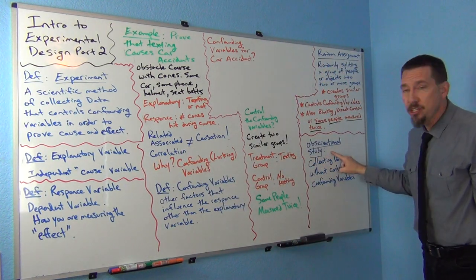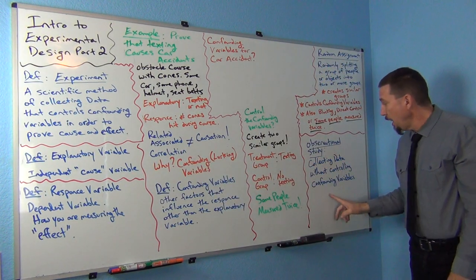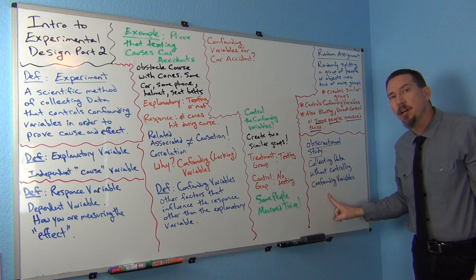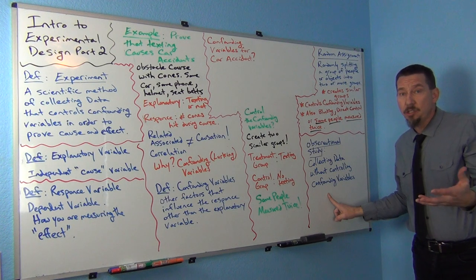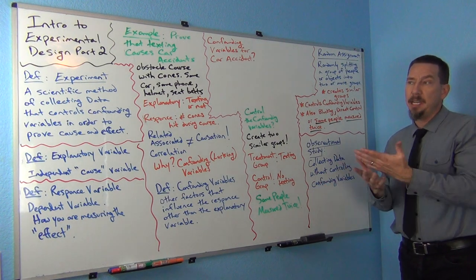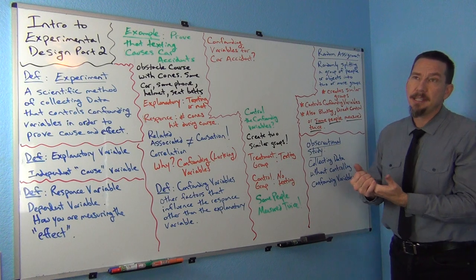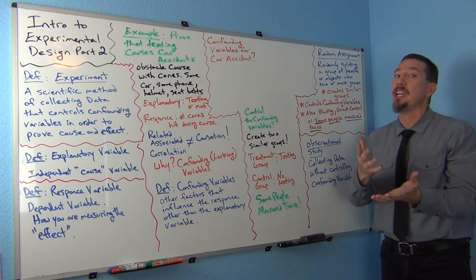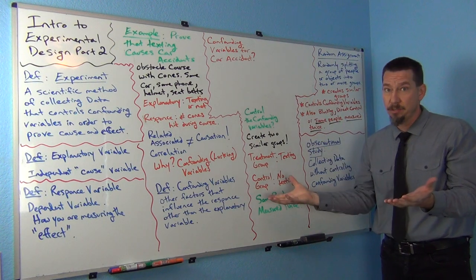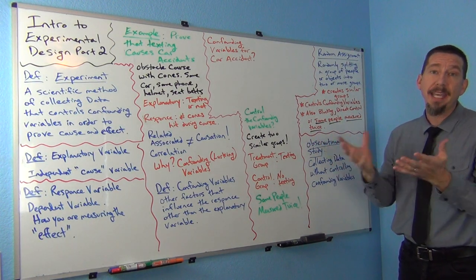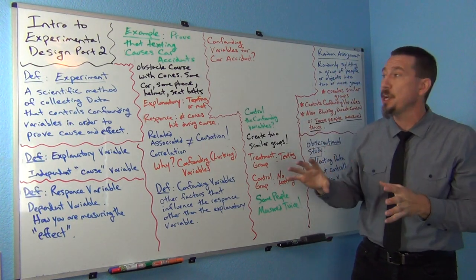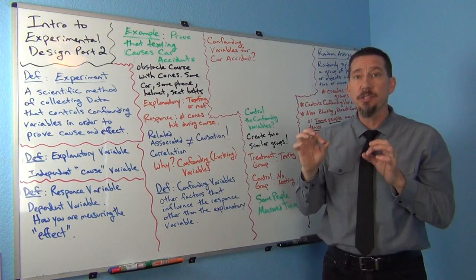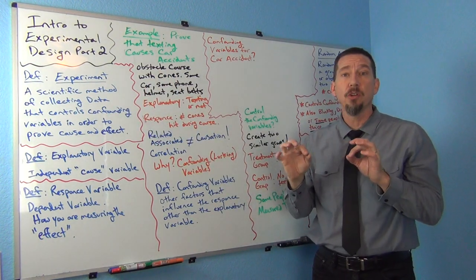That would be what we call an observational study — collecting data without controlling confounding variables. There are probably a lot of reasons that might go into somebody having a car accident other than just texting. That's the main problem, and why experiments were developed. An experiment is a scientific method that controls confounding variables in order to prove cause and effect.